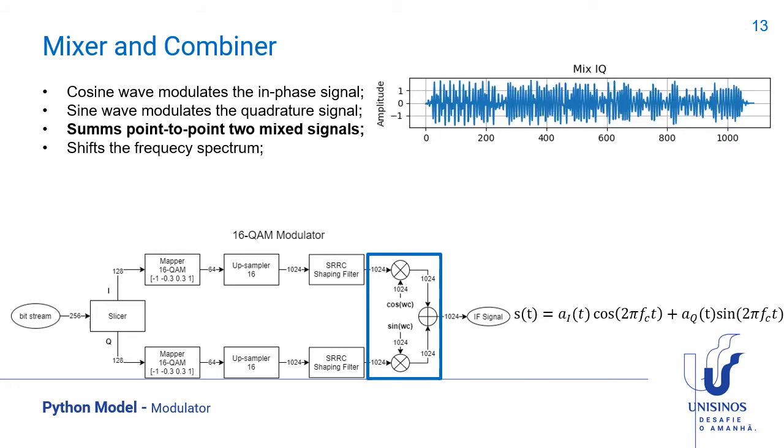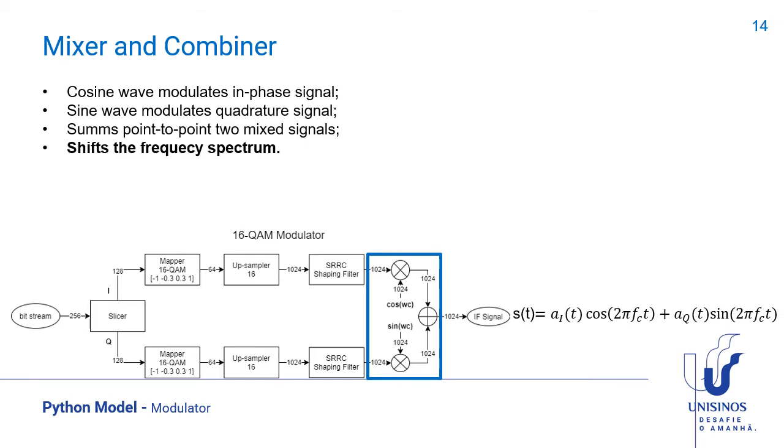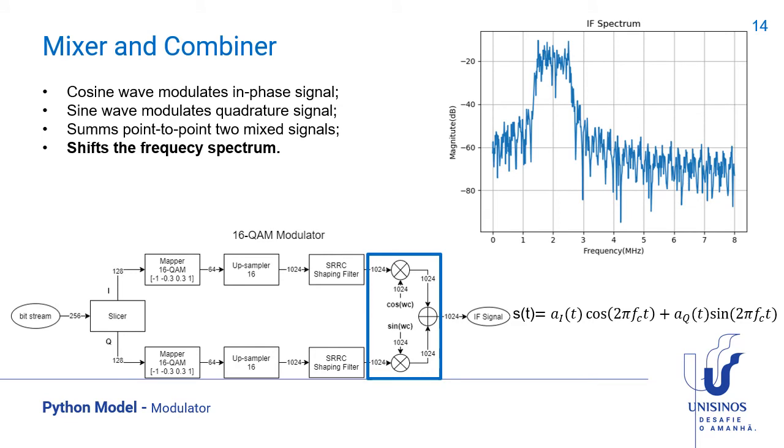Now you can see the combiner sums point to point both of those signals. The reason for that is that it shifts the frequency spectrum. We can see here that we take an intermediary frequency of zero, and when we multiply by a sine of 2 megahertz, for example, we shift the spectrum to an intermediary frequency of 2 megahertz.